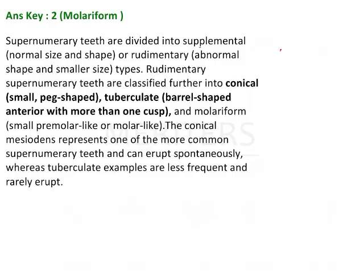Supernumerary teeth can be divided into supplemental or rudimentary. One more thing to remember: the maxillary lateral incisor is a supplemental tooth of the central incisor — normal size and shape, that is a key point to remember. Rudimentary supernumerary teeth are classified further into conical, tuberculate, and molariform.